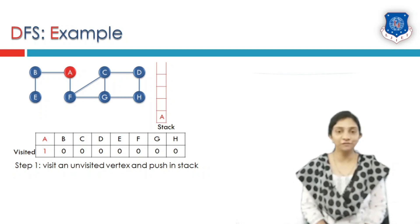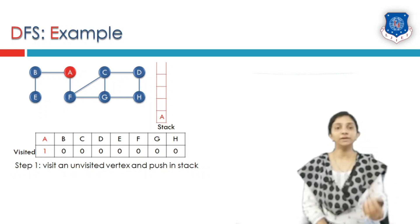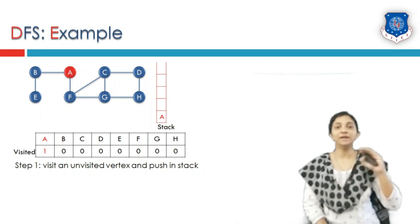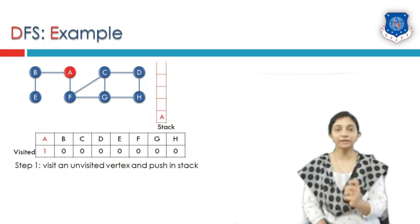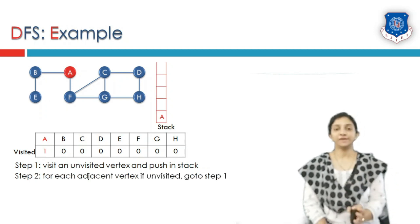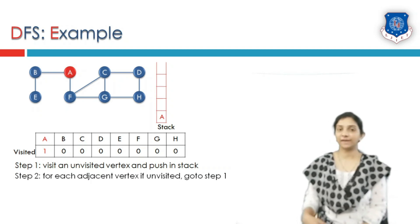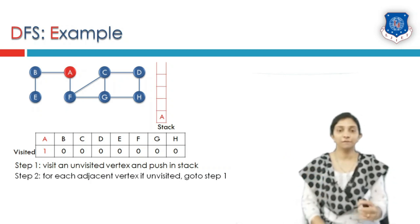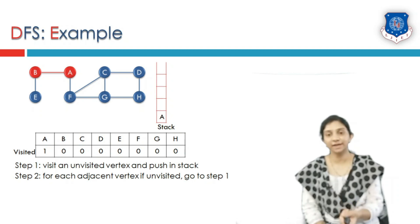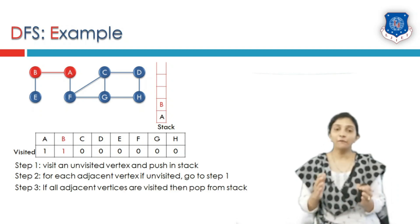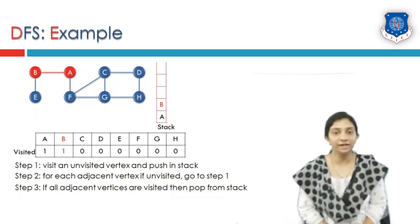Remember the working of a stack — it is a last-in, first-out data structure. Whatever is inserted last will be removed first, and it has only one end, which is the top of the stack. The second step in DFS says that for each adjacent unvisited vertex, we go back to step one and visit them. If all adjacent vertices of a particular vertex are visited, then we pop that element from the stack.